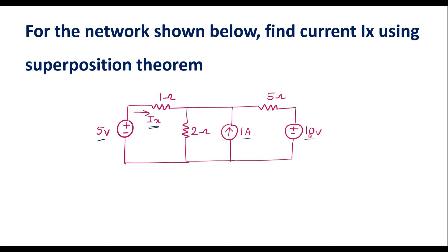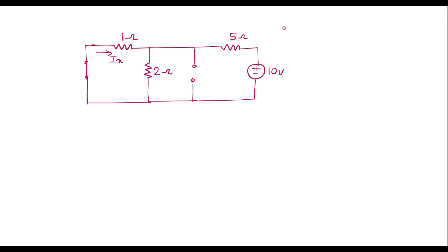Now let me consider the 10 volt source alone. In that case, the 1 amp current source will be open circuited and the 5 volt voltage source will be short circuited. Let me redraw the circuit considering the 10 volt source alone. I will call the current through the 1 ohm resistor as Ix2 — that is the current through the 1 ohm resistor when the 10 volt source alone is considered.